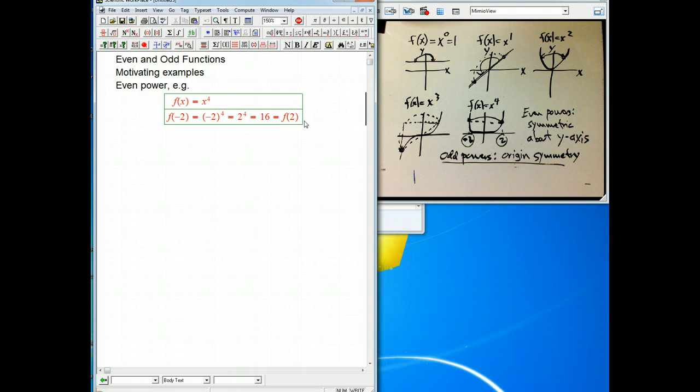It has nothing to do with being 2, this is a general fact. f of minus anything—we'll do this for a variable. By definition, it's (-x)^4. The minus sign goes away. That's the same as x^4, the same as if I had put in x. So that is the definition of what's called an even function.